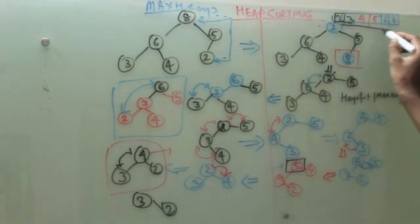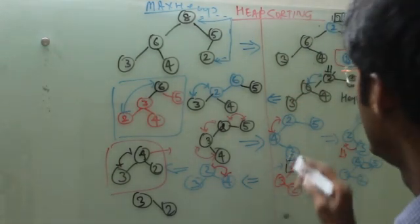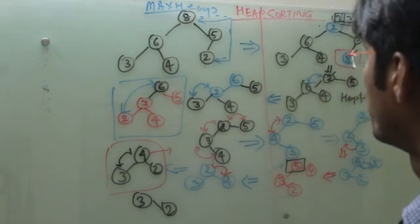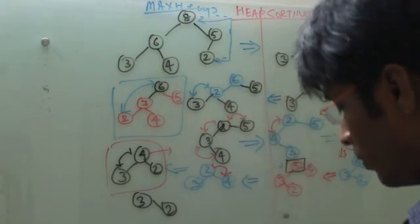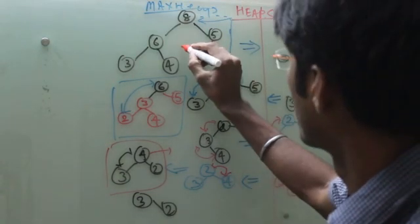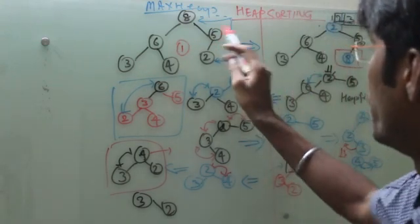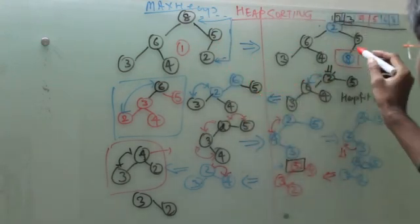So now I have sorted the entire tree with the heap sort. So this is the process: given maxheap, swap the elements, then heapify it.